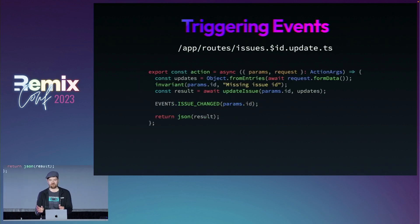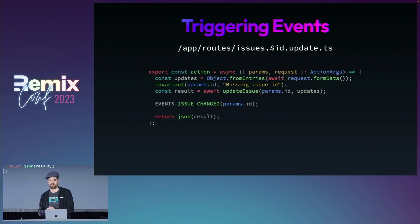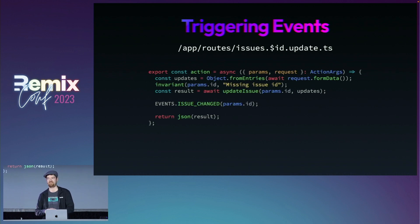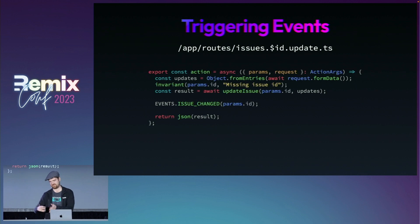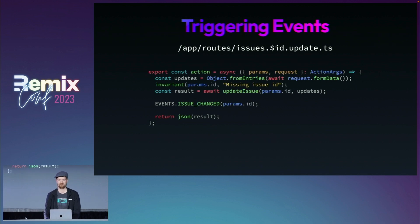To trigger this, in our action where we're going to be updating our issue, after we update the issue, we just call event.issueChanged, and it's going to trigger any clients that are currently subscribed to events for those two routes — slash and slash issue slash the issue that changed.